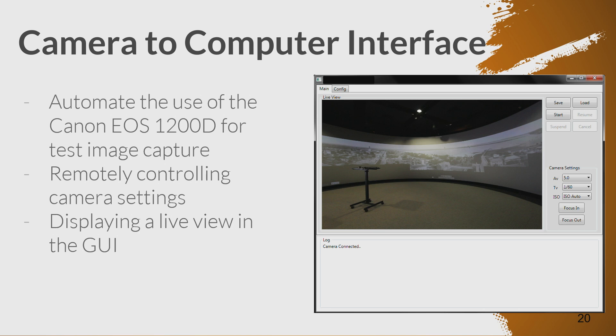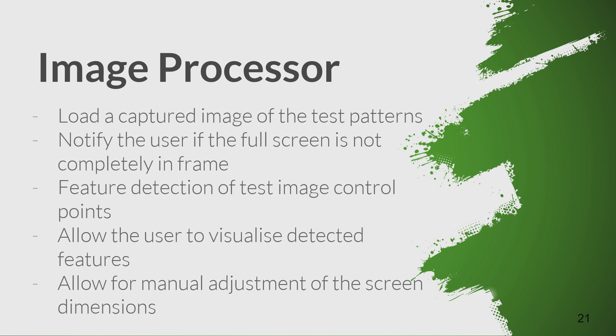We're using a Canon 1200D, which is remotely controlled and displayed in a live view on the GUI of the software. The image processor then loads each of those captured images, notifies the user if it can't see the full screen, performs feature detection of test image control points, allows the user to visualise detected features to confirm everything's working, and allows for manual adjustment of the screen dimensions. Here are the processed images, with dots in the corners and at other particular features representing the software automatically detecting particular features on the display.